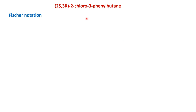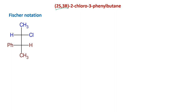Let us start with the structure of the molecule. When writing the structure, there are a lot of things to keep in mind. We can start writing the straight carbon chain and then draw the Fisher notation as per the assignment given, that is 2S3R. We have numbered the carbons from the side where the halogen is, so the four carbons are numbered accordingly.